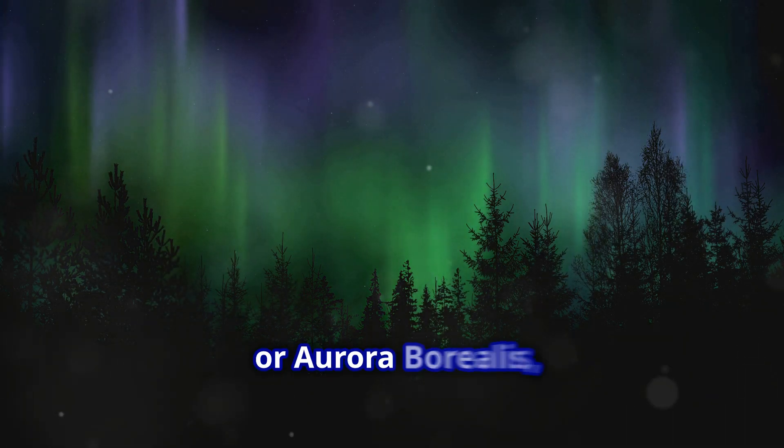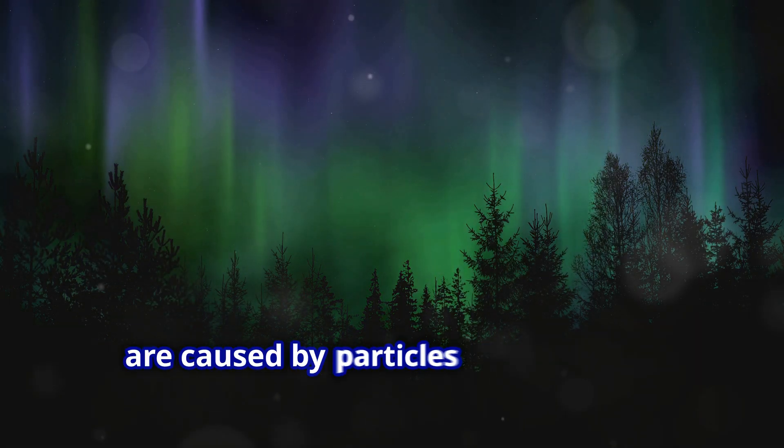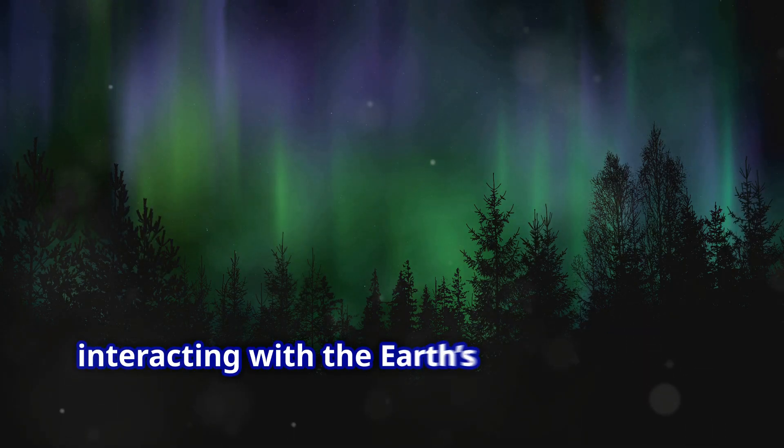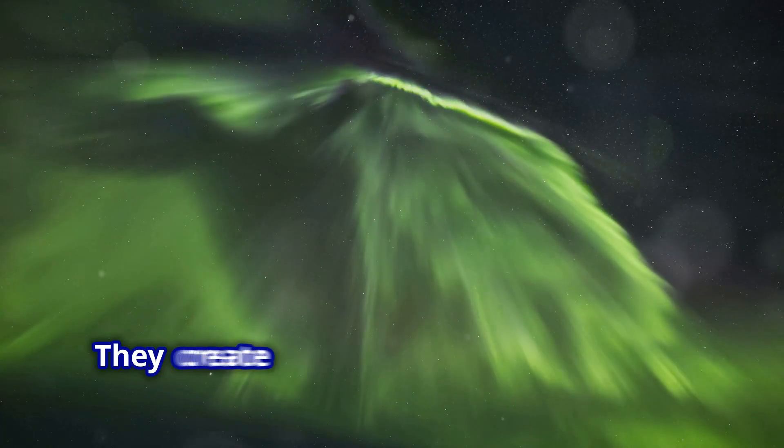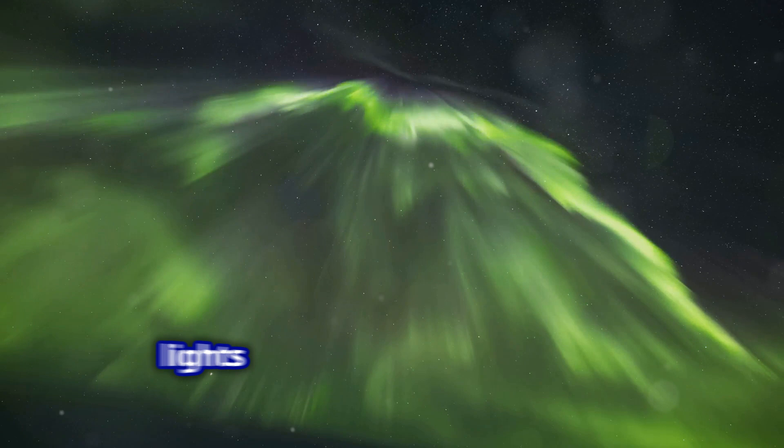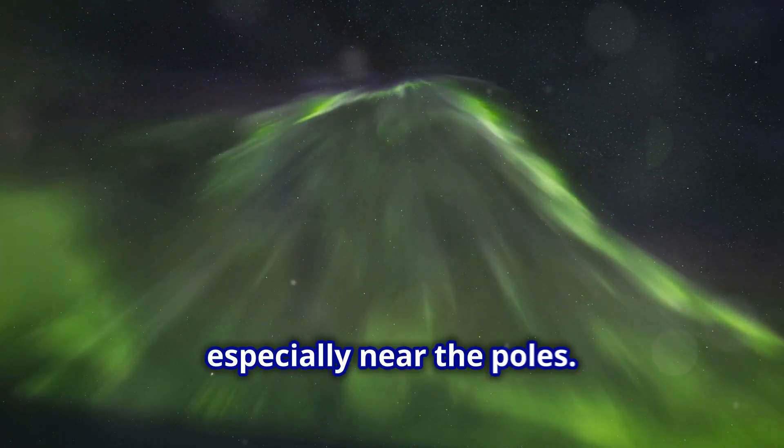The northern lights, or aurora borealis, are caused by particles from the sun interacting with the Earth's magnetic field. They create stunning displays of colorful lights that dance across the sky, especially near the poles.